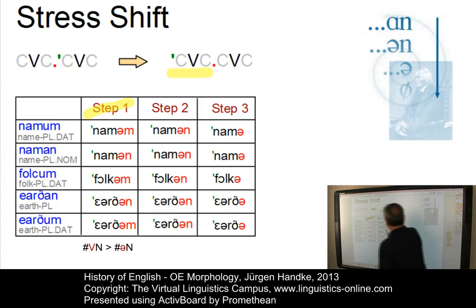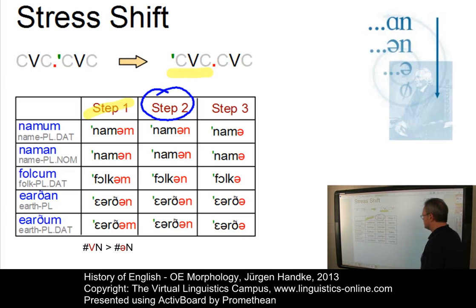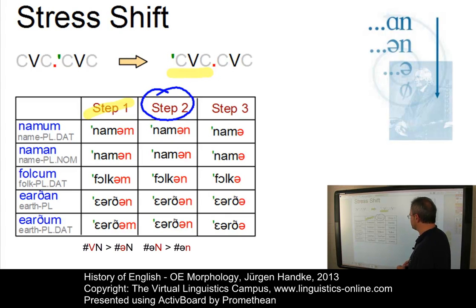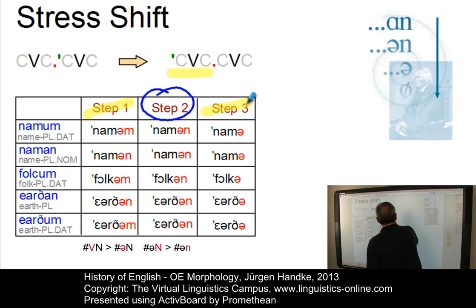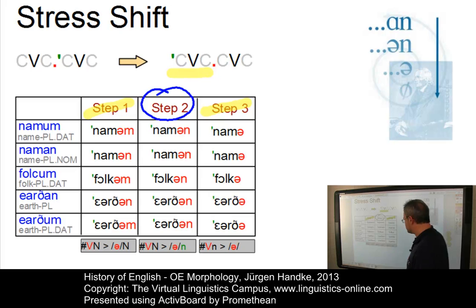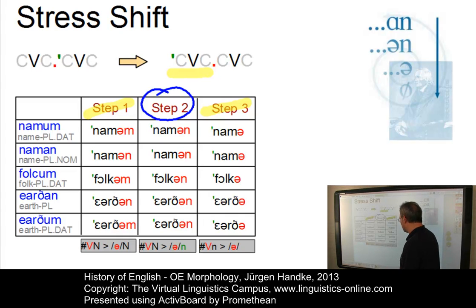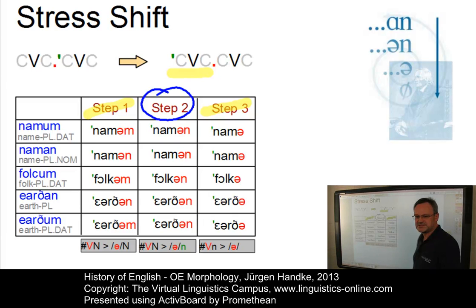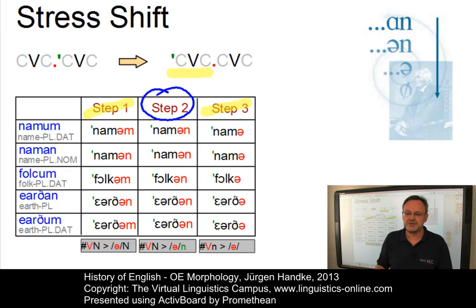The second step merges the two nasals — the bilabial and the alveolar nasal — to an alveolar nasal. So now we have namen, falcum and earthen. And finally, the nasal at the end of words is lost. So schematically: stage one, vowel reduction to schwa; stage two, merger of the two nasals to an alveolar nasal; stage three, loss of the final nasal. These and many other changes had already been underway within the Old English period.